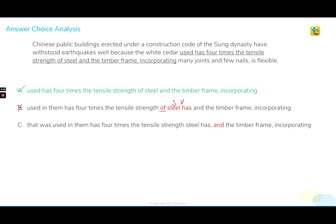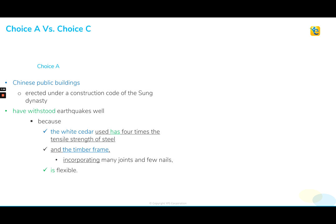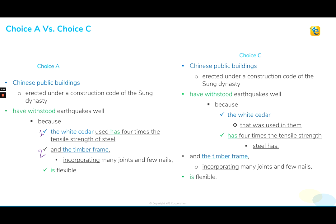Choice C is a very interesting answer choice. You would be surprised to know that most people reject choice A and go with choice C. So what is it that they fail to analyze in choice C that makes it such a popular answer choice? In order to understand that, let's study the structure of choices A and C together. When we look at choice A, we understand that the sentence is presenting two reasons why these particular Chinese public buildings have been able to withstand the earthquakes. Now let's look at choice C. When we break this sentence down, the only difference we see between choices A and C is the use of a comma before "and."